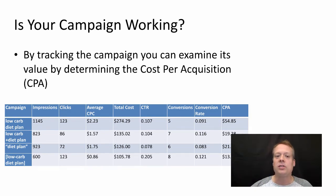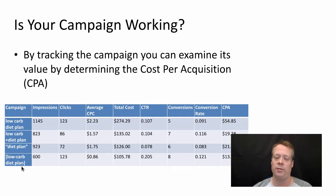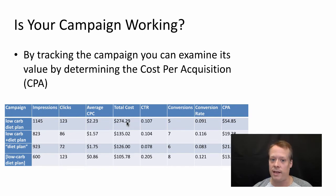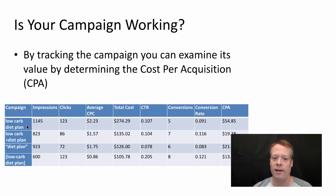Let's look at key phrases as an example, keeping the ad the same. We have four different sets of key phrases: 'low carb diet plan' (broad match), 'low carb + diet plan' (modified broad), 'diet plan' in quotes (phrase match), and 'low carb diet plan' as an exact match. We can look at the impressions and clicks we get for each, and Google Ads will tell us our average cost per click — or give us the total cost, from which we can calculate average cost per click by dividing total cost by clicks. Together, we can put together the total ad cost for all the impressions we saw.